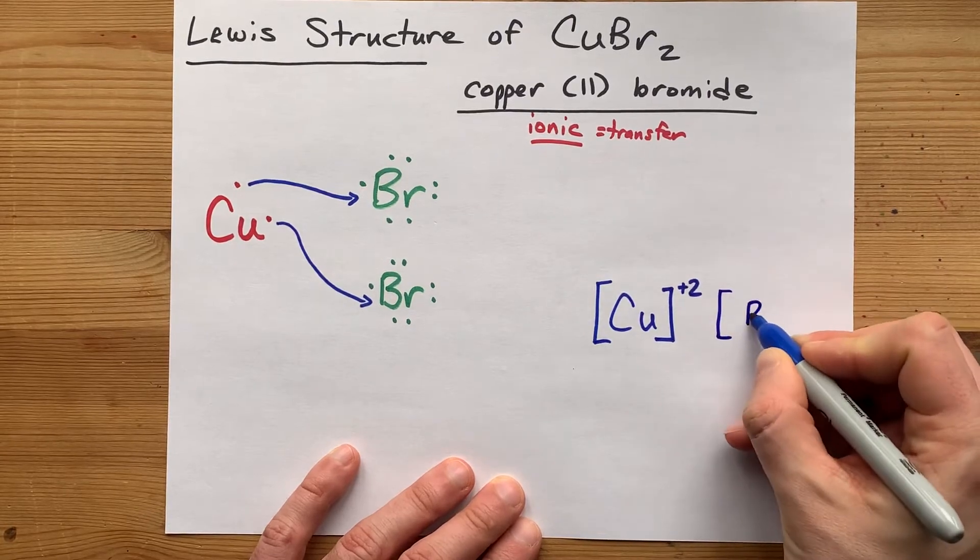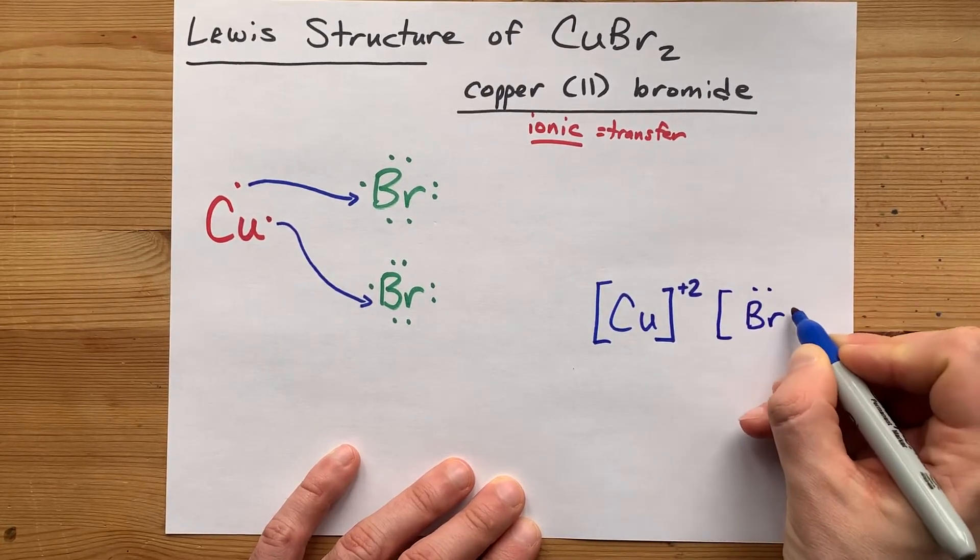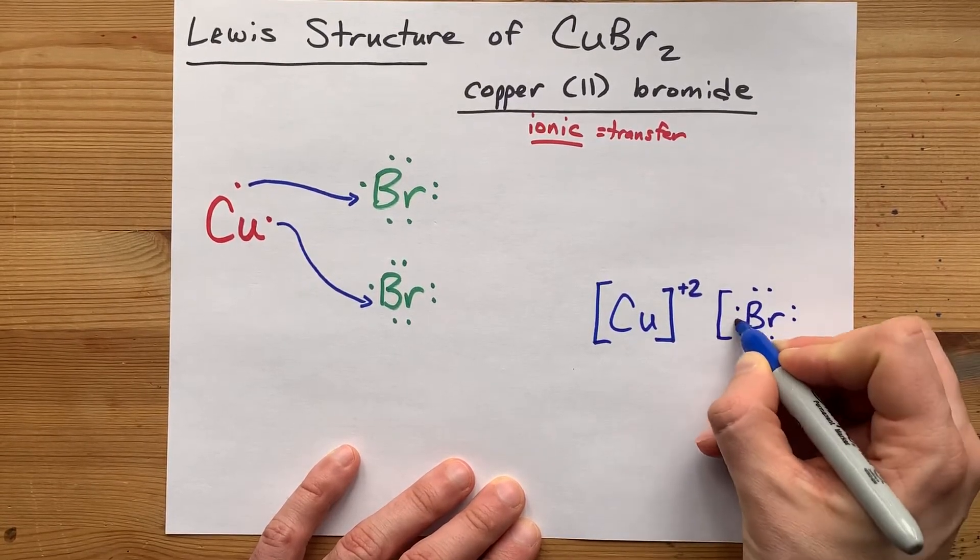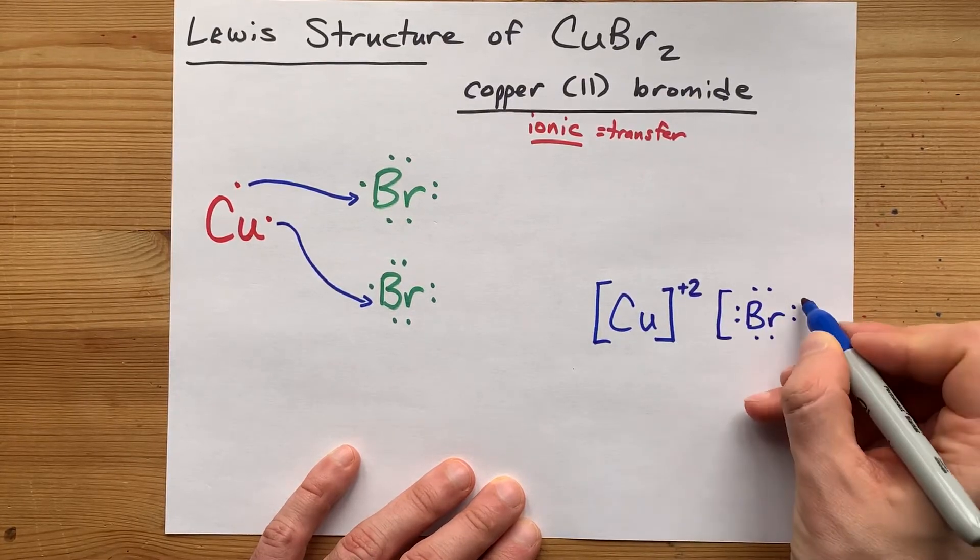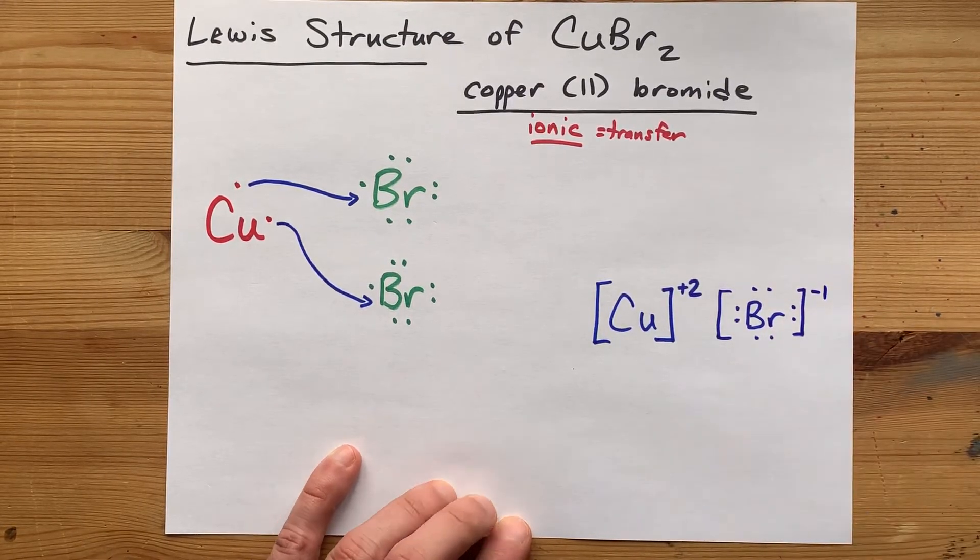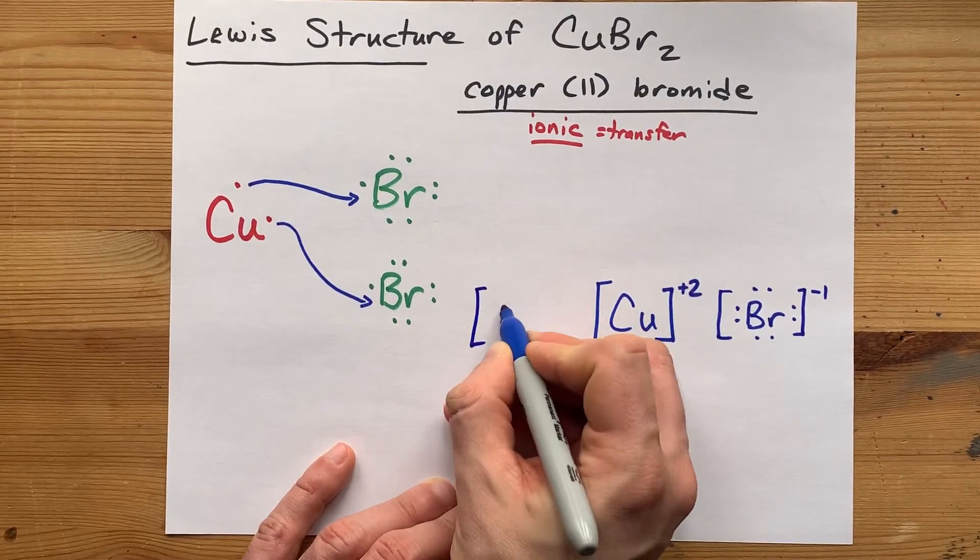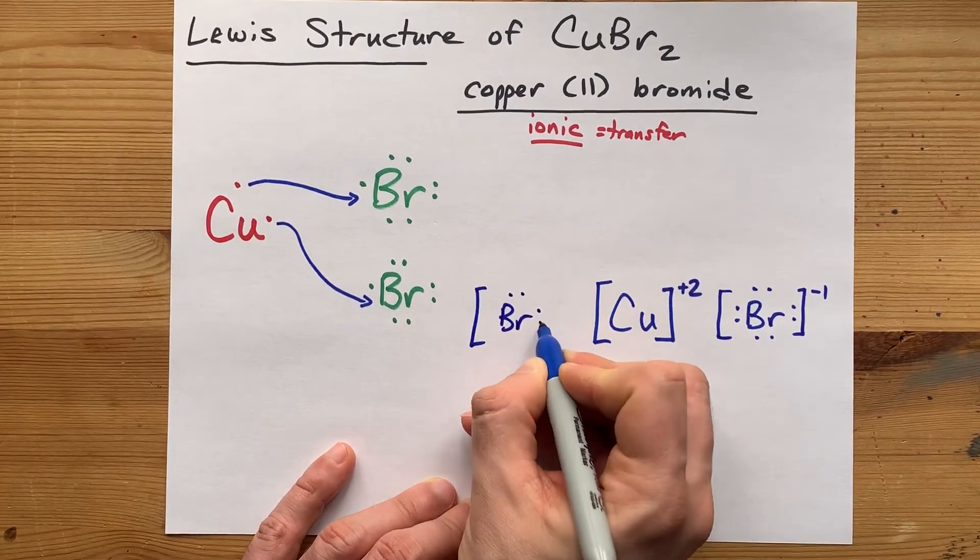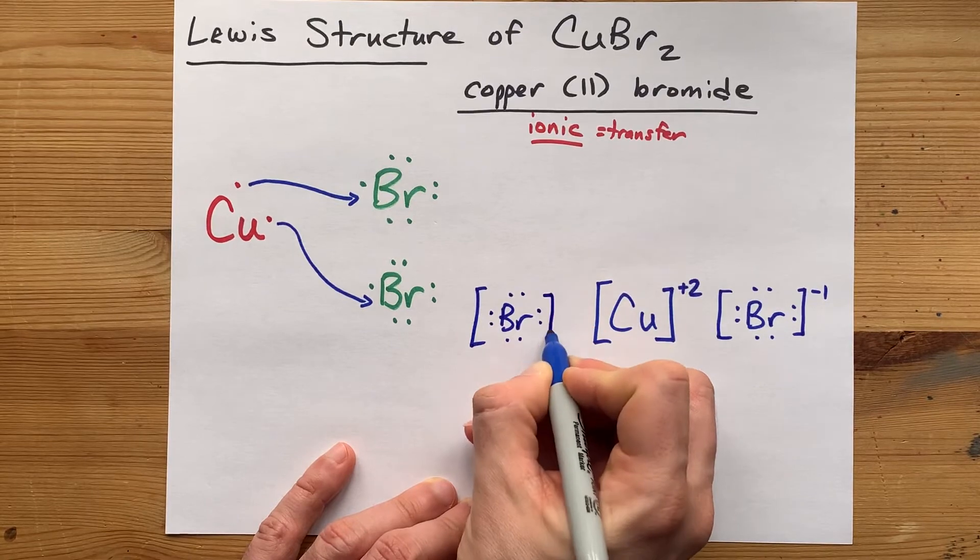You'll also have to draw yourself a bromine with 8 valence electrons around it because it brought 7 and took 1 from copper. That gives it a -1 charge, and because that happened twice, you need to draw an entire second bromine.